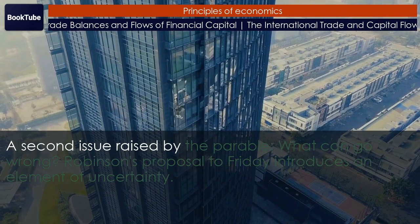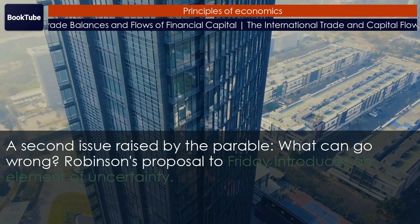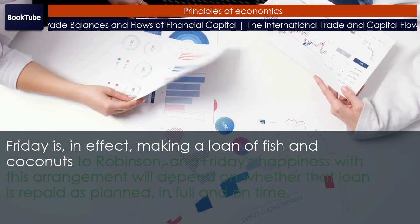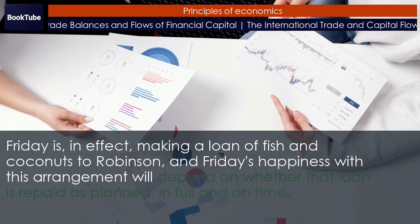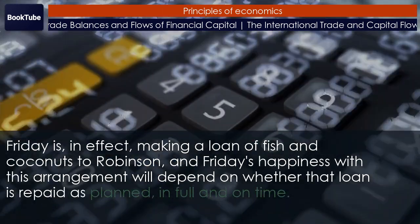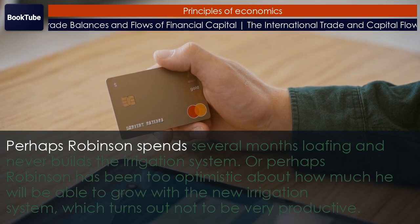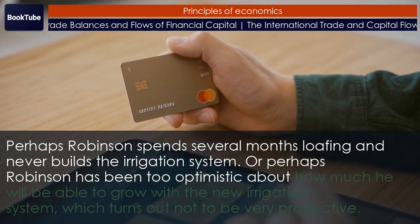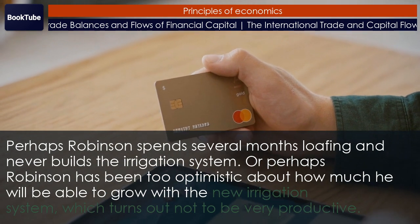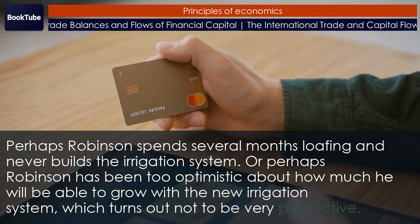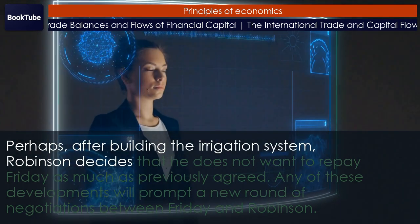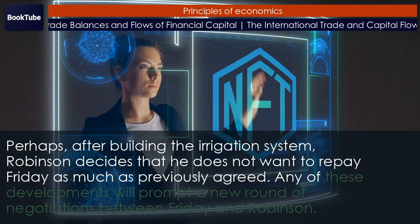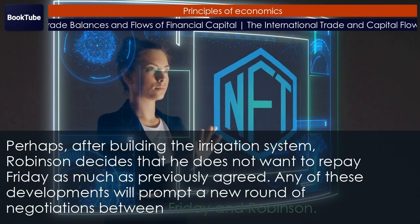A second issue raised by the parable: what can go wrong? Robinson's proposal to Friday introduces an element of uncertainty. Friday is, in effect, making a loan of fish and coconuts to Robinson, and Friday's happiness with this arrangement will depend on whether that loan is repaid as planned, in full and on time. Perhaps Robinson spends several months loafing and never builds the irrigation system, or perhaps Robinson has been too optimistic about how much he will be able to grow with the new irrigation system, which turns out not to be very productive. Perhaps after building the irrigation system, Robinson decides that he does not want to repay Friday as much as previously agreed. Any of these developments will prompt a new round of negotiations between Friday and Robinson.